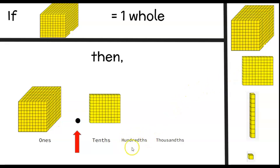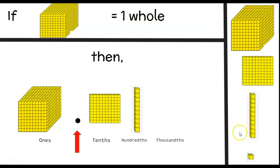Now let's move to the hundredths place. I can do this two ways. What is one thousand divided by one hundred? One thousand divided by one hundred is ten, so I would use the ten stick. You could also look at it as: the hundredths place is ten times smaller than the tenths place. So the hundredths flat divided by ten gives me ten — the ten stick.